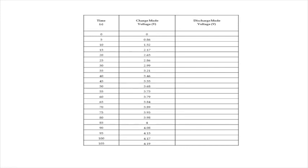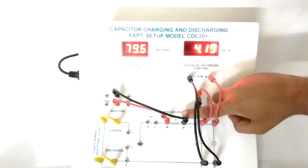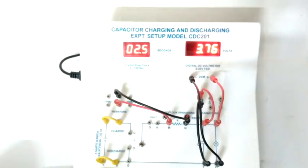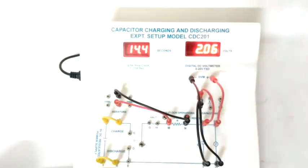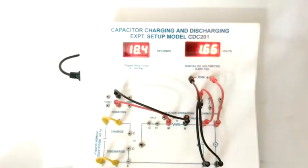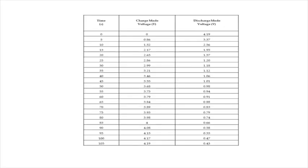At the end of the charge mode, the next part starts without a break — don't change anything. In discharge mode studies there are three steps to perform one after the other: press and hold the reset button; quickly push switch S1 downwards to discharge mode and immediately release the reset button. If there is any delay in releasing the button, the part of discharge taking place during that period goes unaccounted, causing some error. Now start noting down voltage V at every five seconds in the discharge mode studies column until the voltage becomes constant. The voltage reading at t = 0 is the same as the last reading in charge mode.